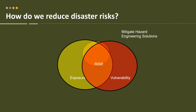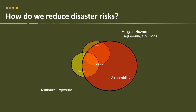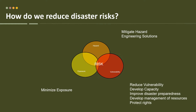We can focus on the hazard and try to mitigate it by providing engineering solutions — place a dike, build stronger houses — so that the impact of the hazard will be reduced. We can focus on minimizing the exposure by evacuating during a disaster or relocating to less hazard-prone areas. Or we can focus on vulnerability: reduce it, develop the capacities of people, improve disaster preparedness, develop the management of natural resources, protect the rights of the most vulnerable. We can even focus on the risk itself and transfer it to other institutions, which is what we do when we get insurance — we give the risk to the insurance company so that if something happens, they bear the cost.